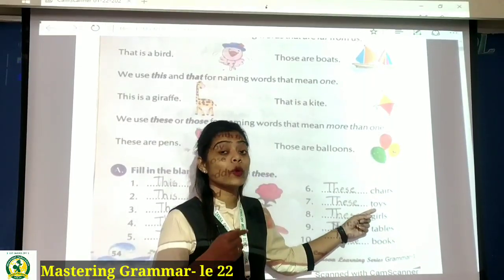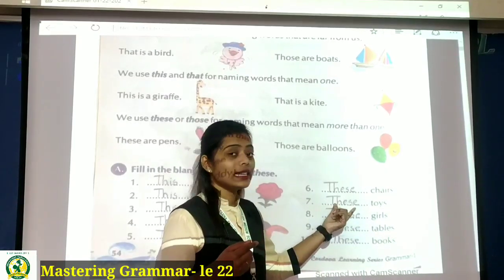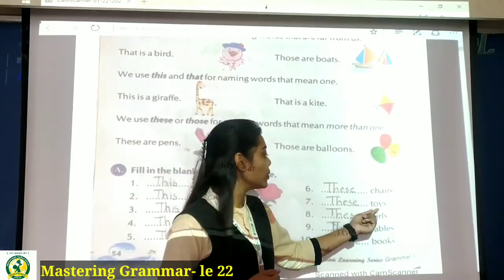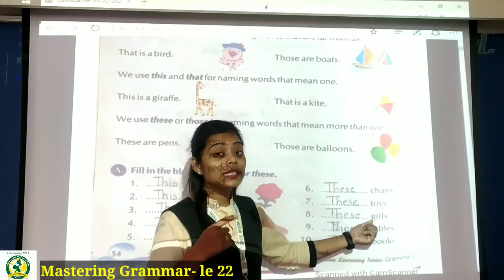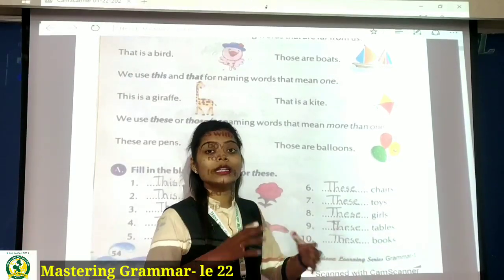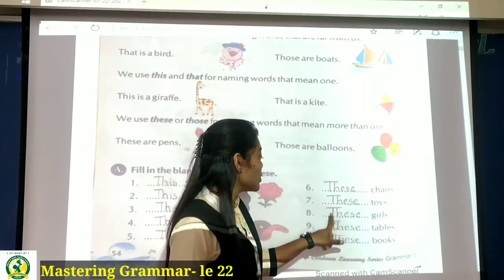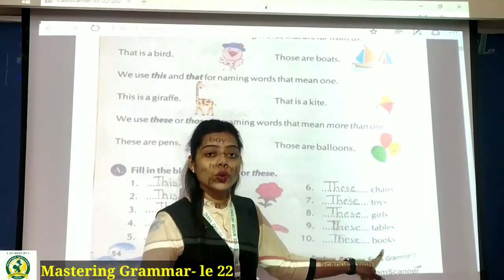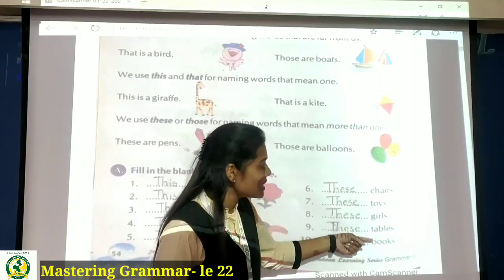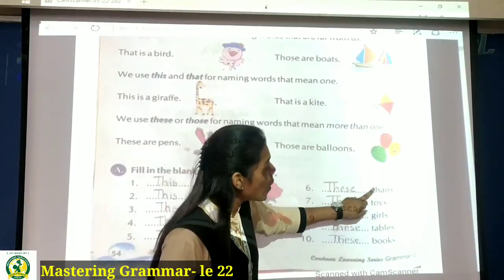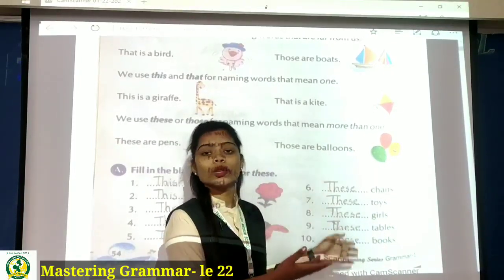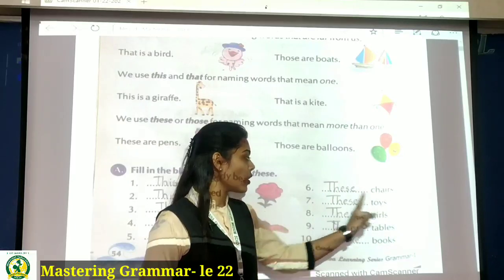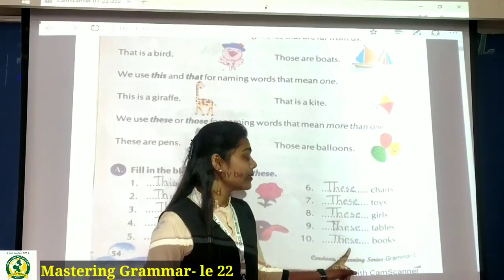Toys — means more than one, plural. So these toys. Then girls — not a girl singular, but girls means bhoat sari, plural. These tables. These books. Sabhi yehaan peh joh naming words hain, joh nouns hain, unko S laga hua hai — matlab yeh sari plural form mein hain. Toh isi liye sabko these lagega. These chairs, these toys, these girls, these tables, these books.